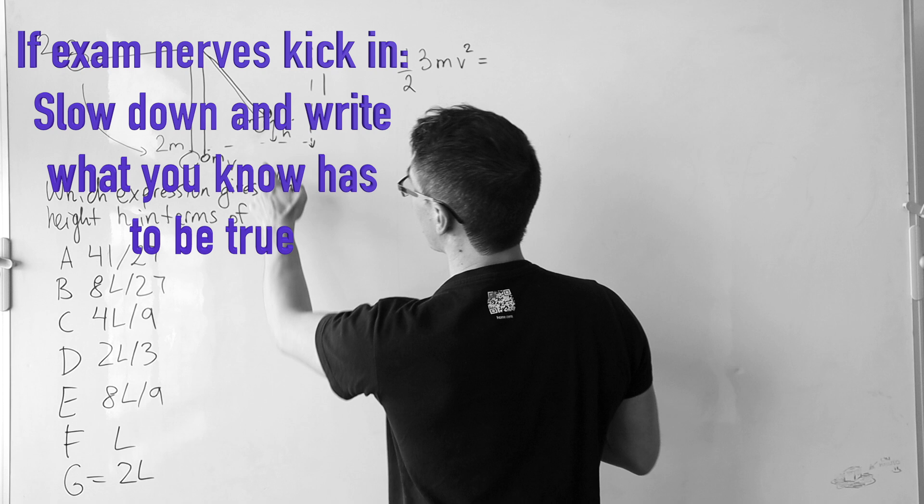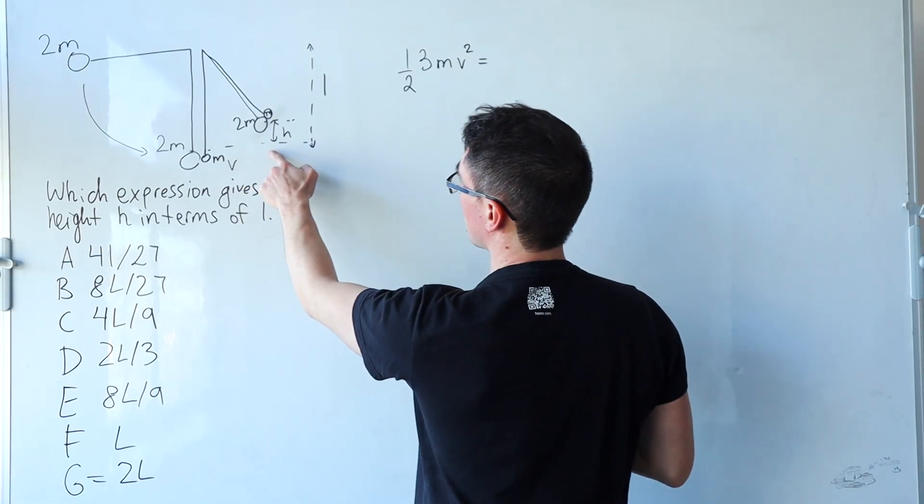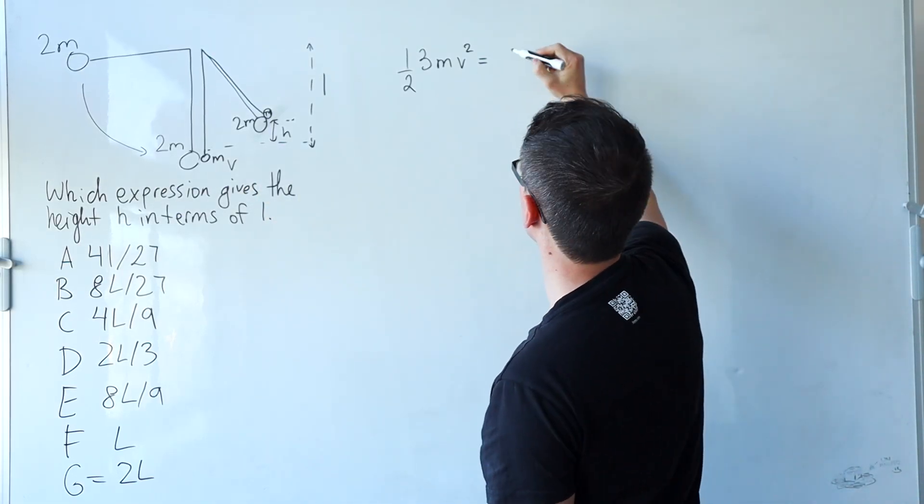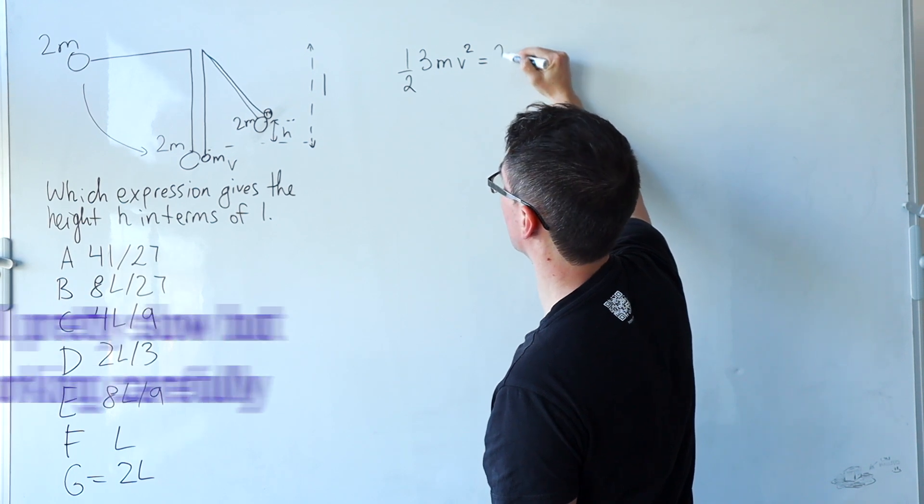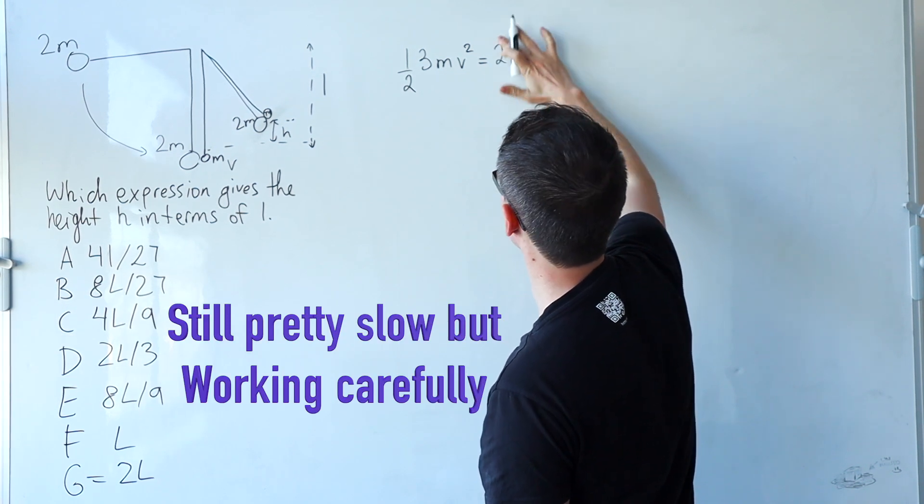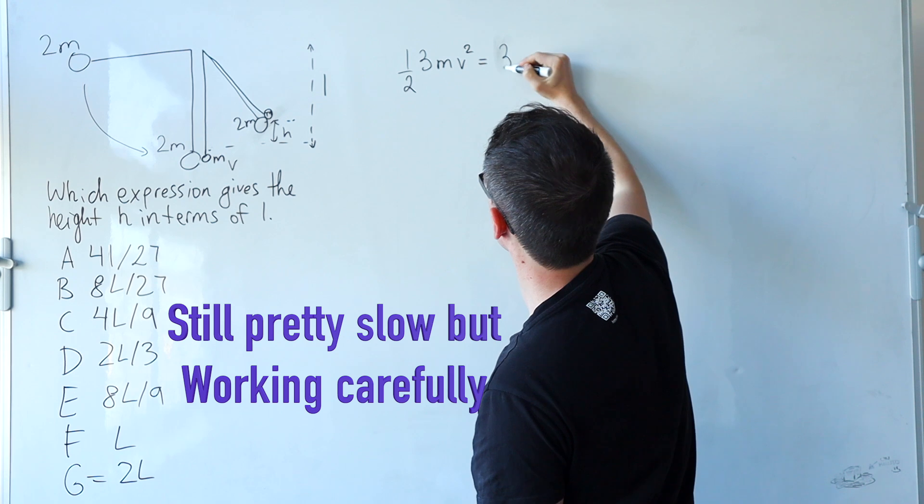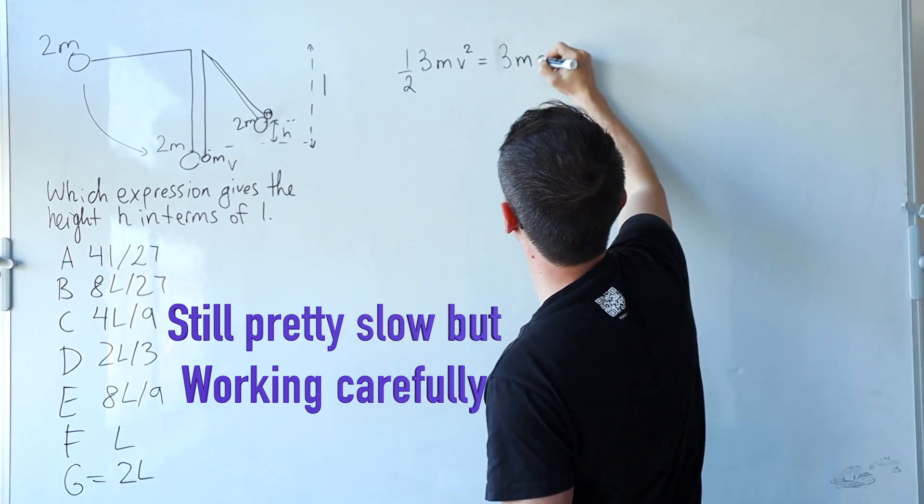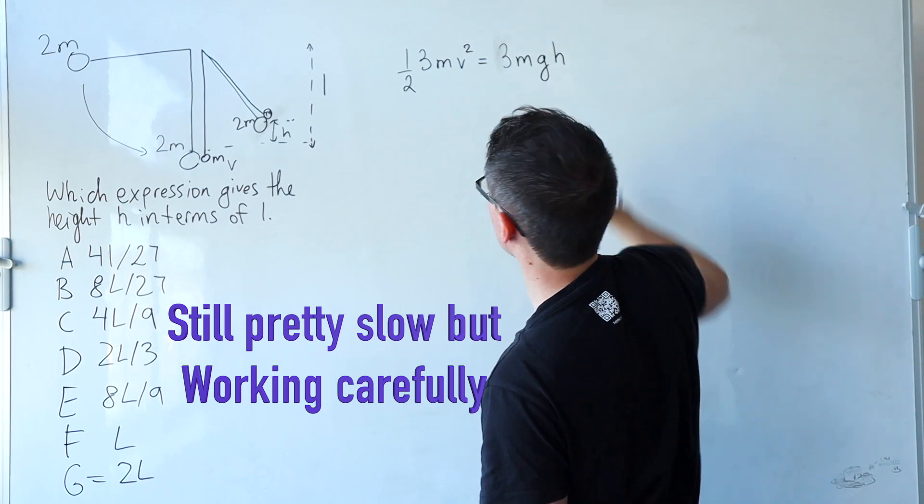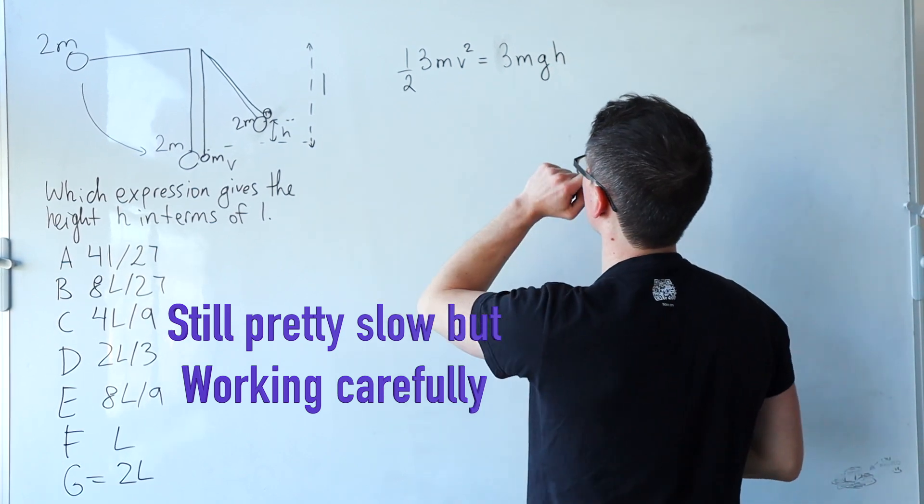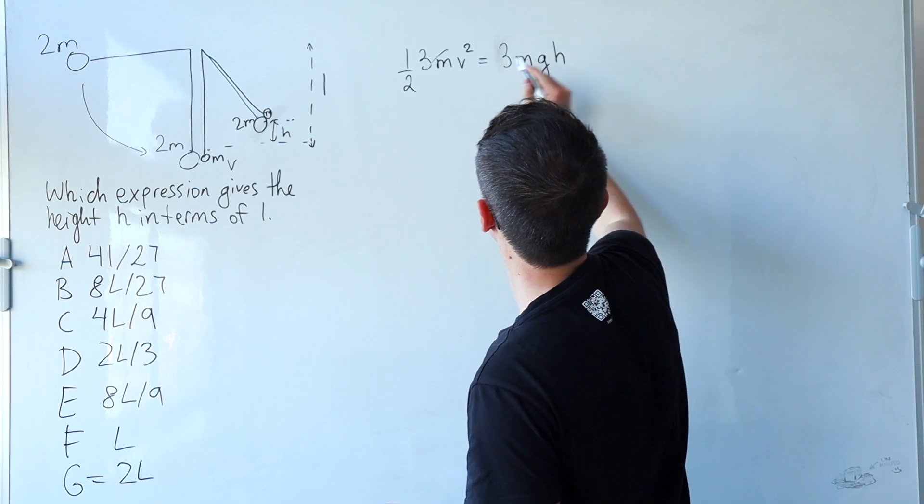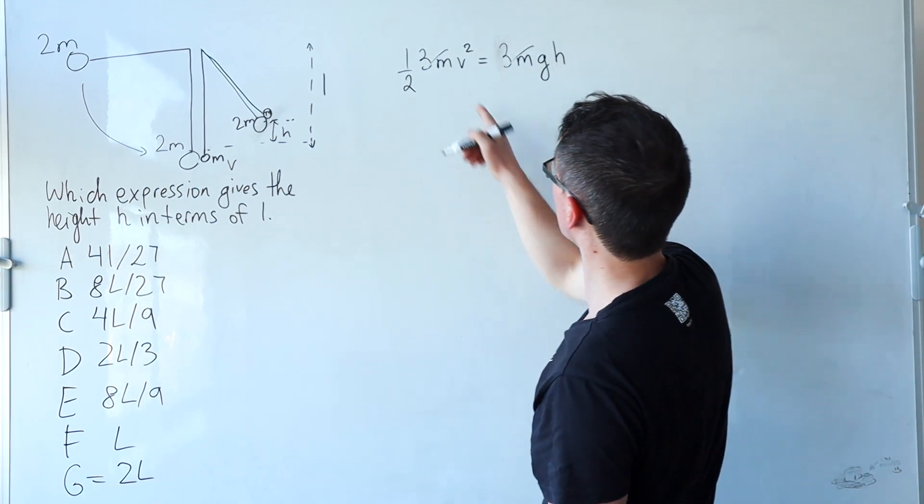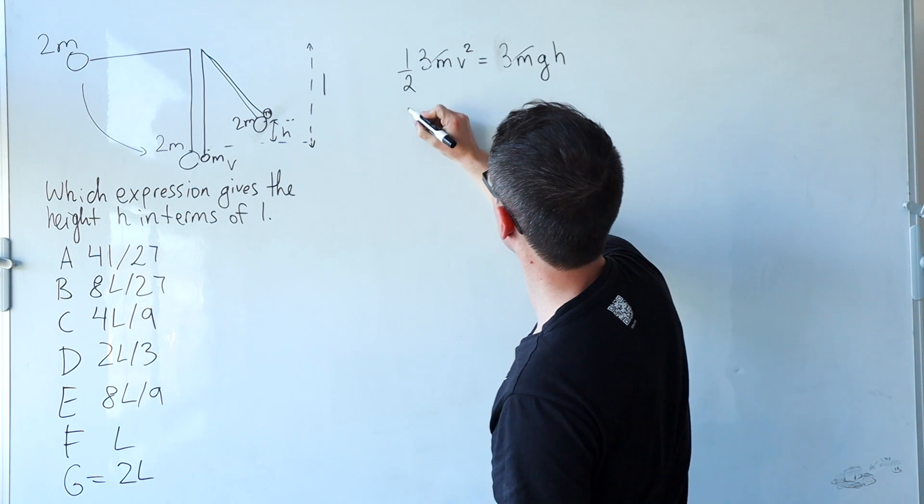This is going to give me the potential energy of this, which is going to be the same mass or is that going to be 2m plus m which is 3m and then that will be multiplied by G and then multiplied by H. The masses will just cancel out. So the height H will just depend on the speed V.